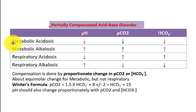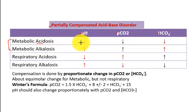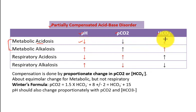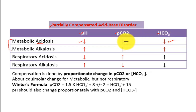In metabolic acidosis, because it is acidosis, the pH is low. This metabolic acidosis is because of bicarbonate being down. So in metabolic acidosis, there will always be low bicarbonate. And because of the compensatory response, carbon dioxide will also follow — it will be low.